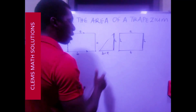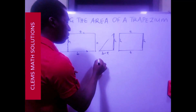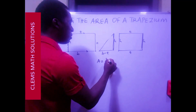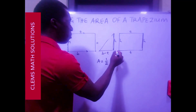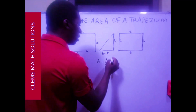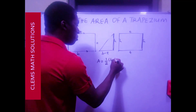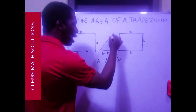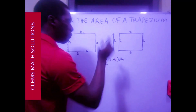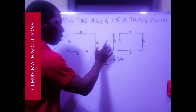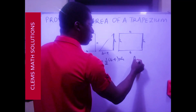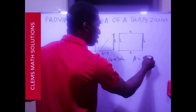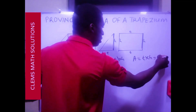Now I've got everything I need. The area of the triangle is half base times height, and here the base is B minus T and the height is H, so the area of the triangle is half times (B minus T) times H. The area of the rectangle is length times width, which is T times H — written as TH.